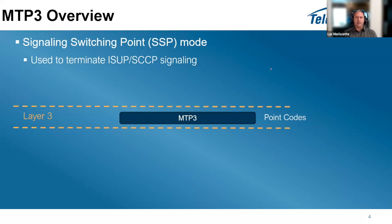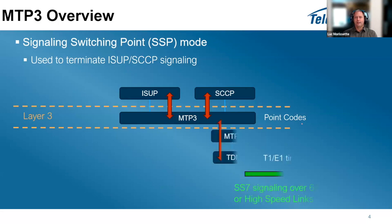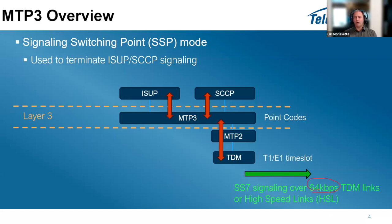MTP3 can work in two main modes. The first is SSP mode - Signaling Switching Point - where MTP3 operates at layer three, referencing point codes, and is used to terminate ISUP and SCCP signaling. When ISUP wants to send a message it sends to MTP3 first, which finds the correct destination. The underlying layer can be MTP2 running over TDM - typically time slots at 64 kbps or 56 kbps - or high-speed links at 1.5 or 2 Mbps.